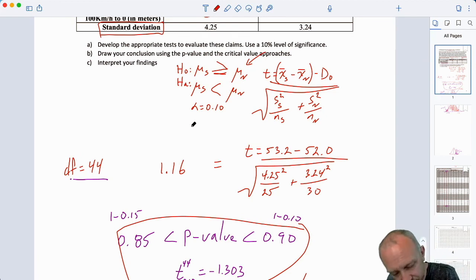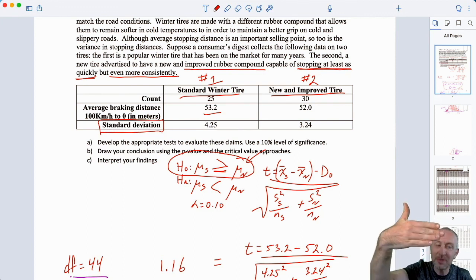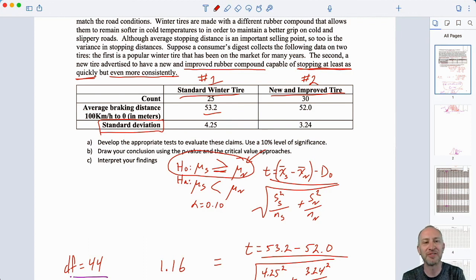Certainly, we can say that this new rubber compound that we've developed for these winter tires, we have evidence to show that it has reduced the variance, that they are, in fact, more consistent in their stopping distance. Now, we can also say that it did not come at a trade-off in terms of its average stopping distance. It stops at least as quickly or at most as far distance or as much of distance. So, it's either stopping equal to or less distance than the standard tire. Okay. So, that's it. We've gone through both parts of this problem. Hopefully, that all makes sense. Thank you all very much for watching. Bye-bye.